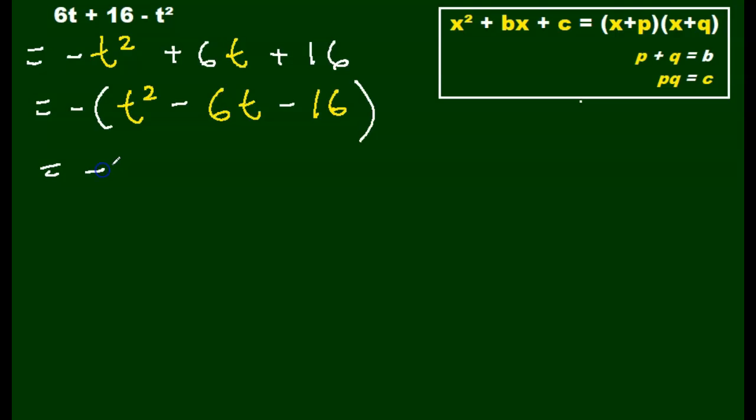I'm going to rewrite it. Make sure we bring down that negative sign. Put in my double parentheses and my t in there because again, t times t gives me t squared. Let's look at our constant and let's write down our factors of 16. 1 times 16, 2 times 8, or 4 times 4.